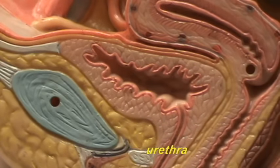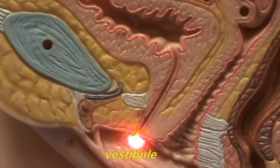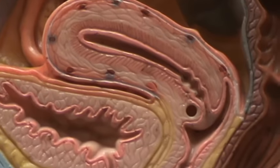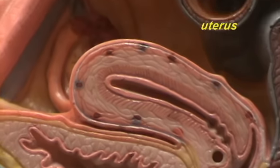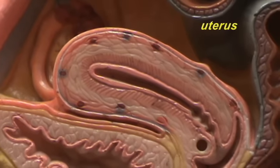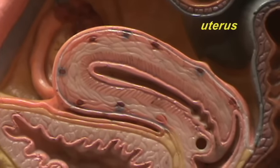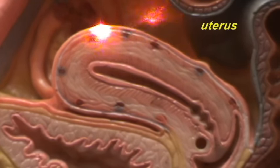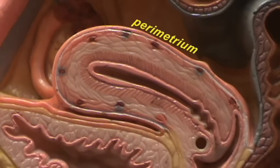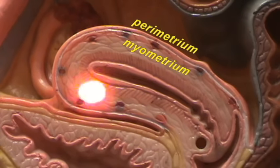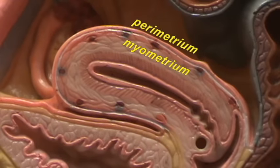Take a closer look at the uterus. We can see that you can divide it into layers. The outer layer is the perimetrium. The thick muscular wall of the uterus is the myometrium. The mucosal lining of the uterus is referred to as the endometrium.